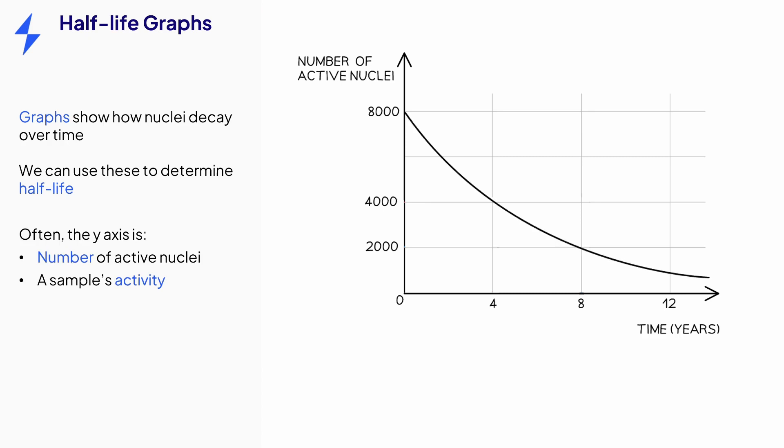Here, 8000 nuclei have halved to 4000 over 4 years. This means the half-life of the source is 4 years. Remember, half-life is independent of sample size. So, it will take another 4 years for those 4000 nuclei to drop to 2000.